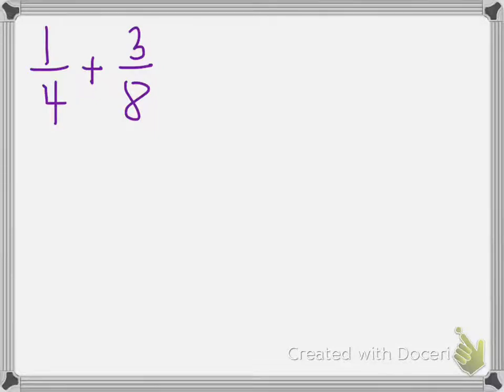All right, so I'm going to show you guys how to add one-fourth and three-eighths using a common denominator. And the method we're going to use to find the common denominator is by multiplying the two denominators in one-fourth and three-eighths.